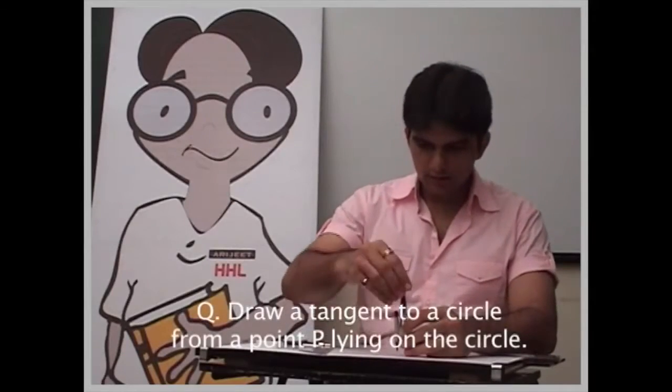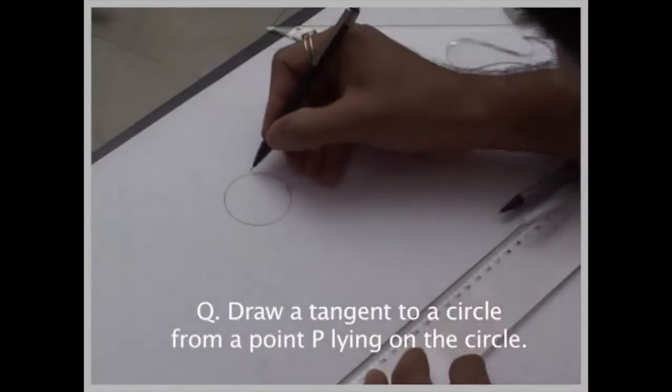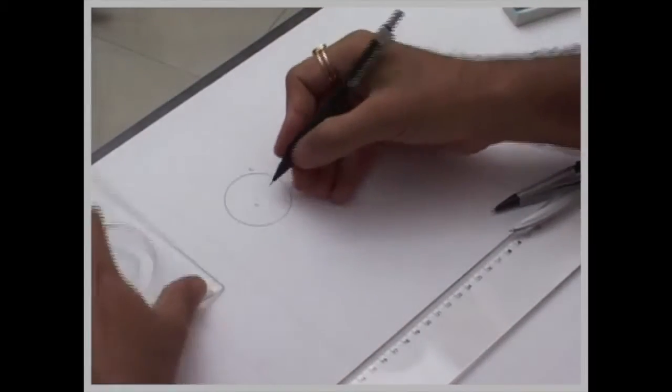Let's say there is a circle of radius. If I want to draw a tangent from this point P, we have a circle of x radius and we have to draw a tangent from point P. So what can I do?